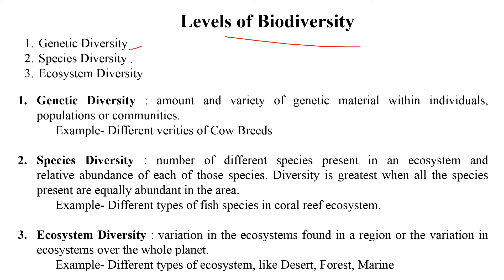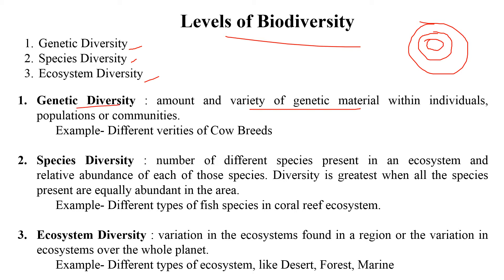Now, the levels of biodiversity. There are three levels: genetic diversity, species diversity, and ecosystem diversity. Genetic diversity refers to the variety of genetic material within a particular species in a population or community. A common example is the cow — Bos indicus is a single species but has different breed varieties such as Jersey and Sahiwal. They are the same species but different genetic varieties, which is called genetic diversity.